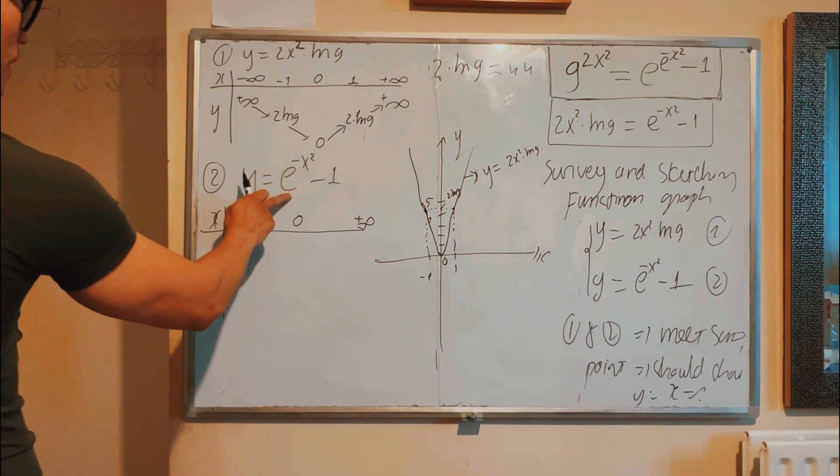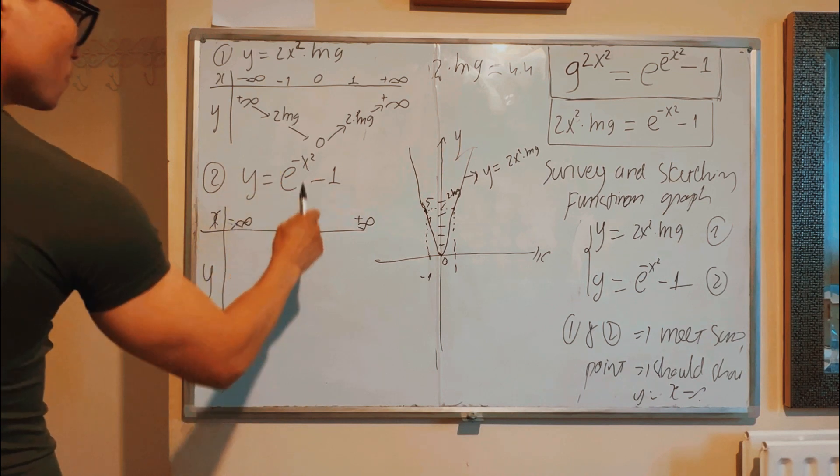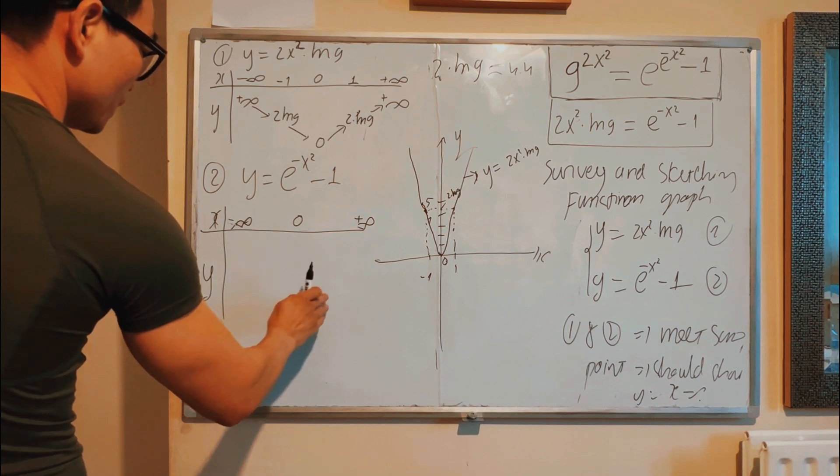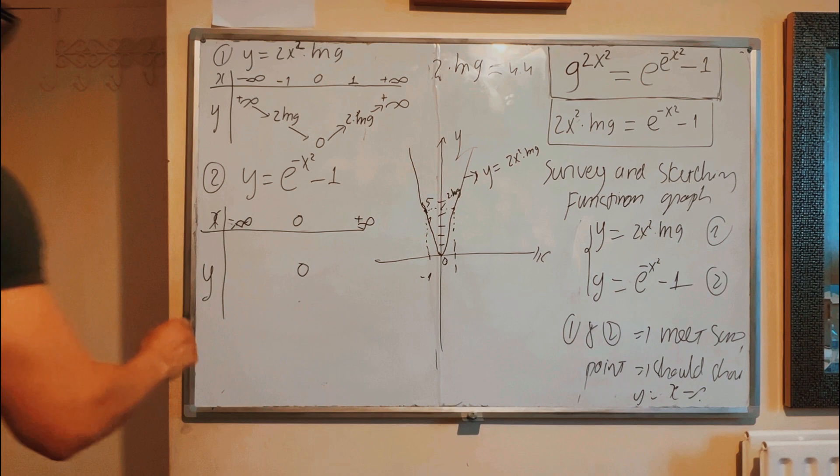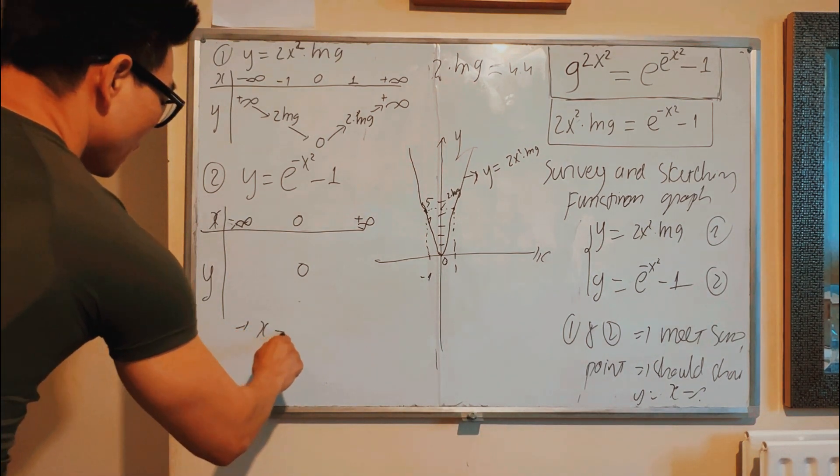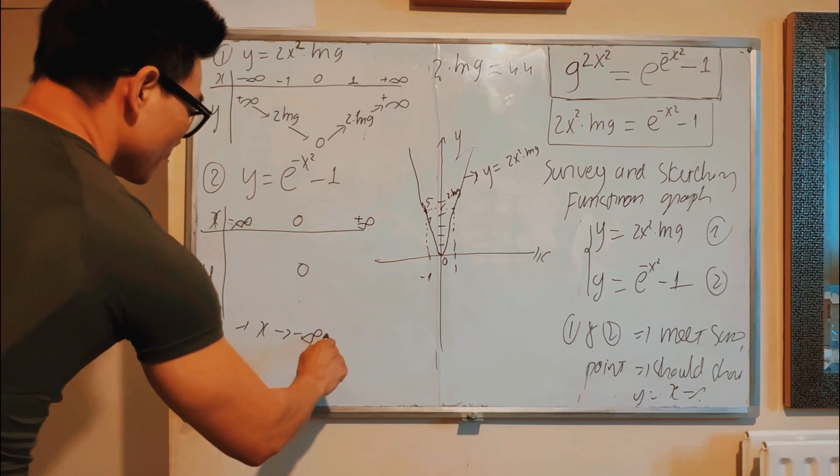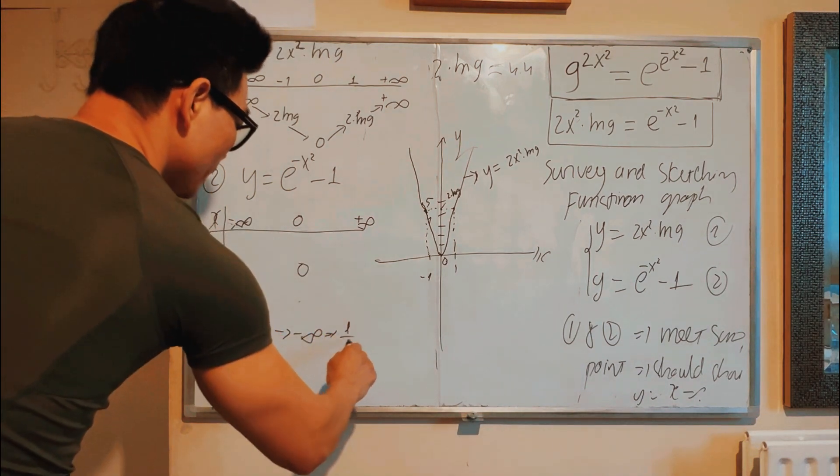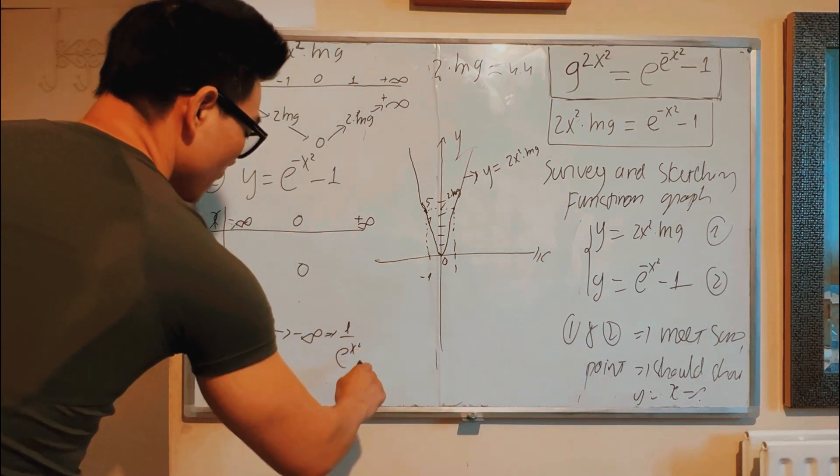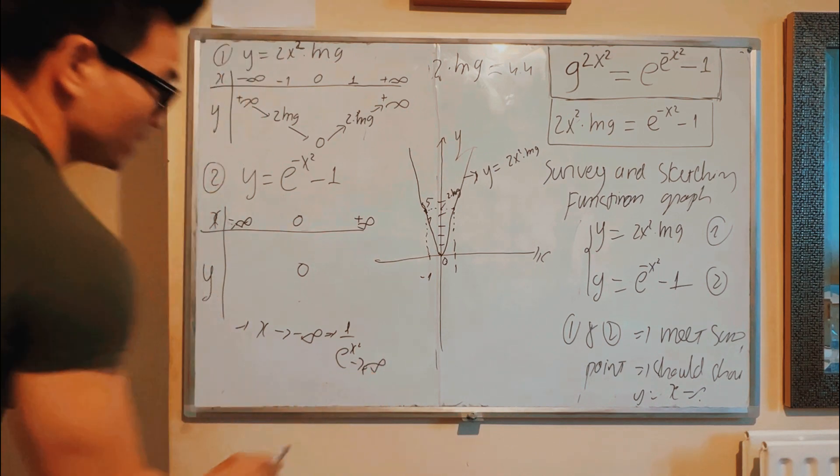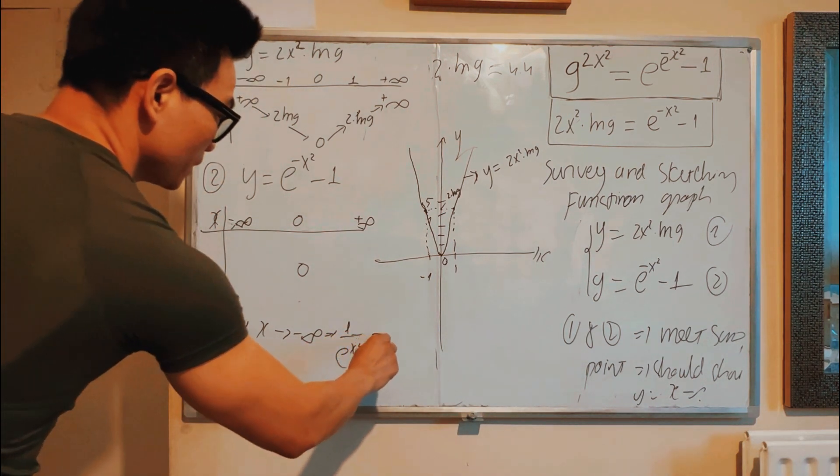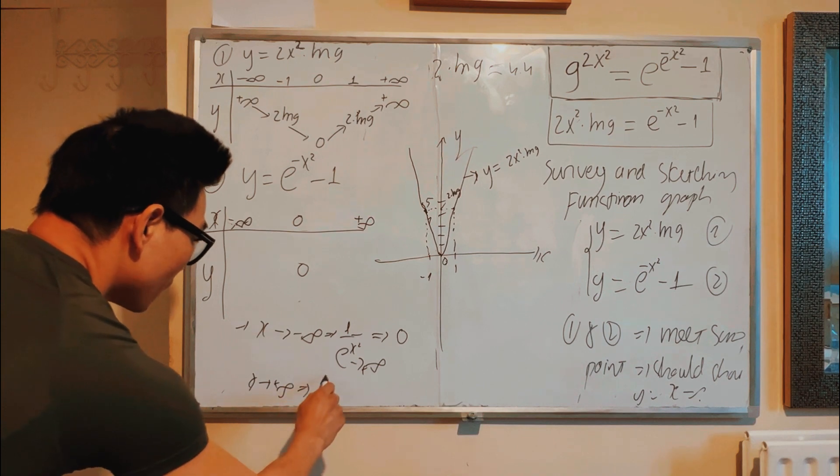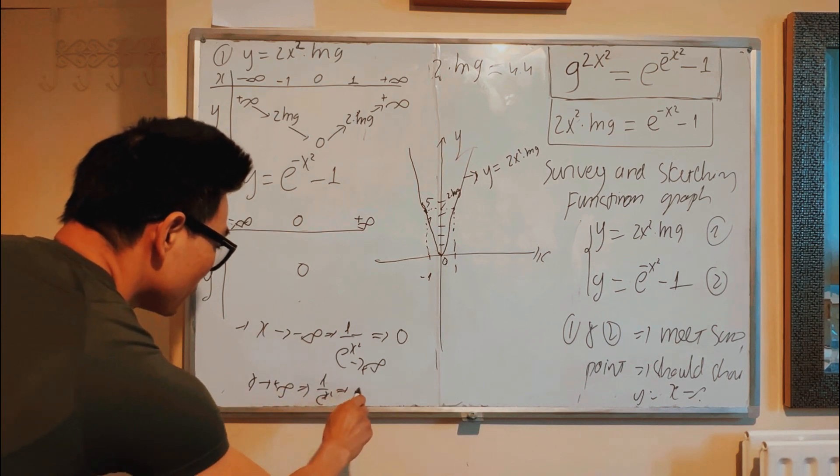Okay, special point: X equal to zero. X equals zero, so e equals 1, and 1 - 1 equals zero. Yes, zero. If X becomes negative infinity, then e^(-x²), so you can write e^(x²) in the denominator, that one becomes positive infinity. So 1 divided by positive infinity will become zero.